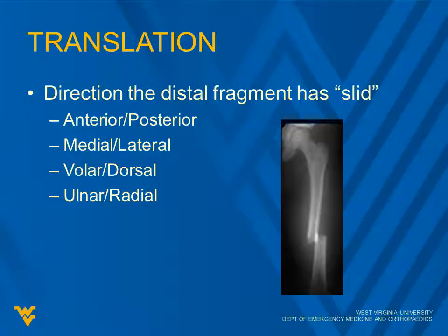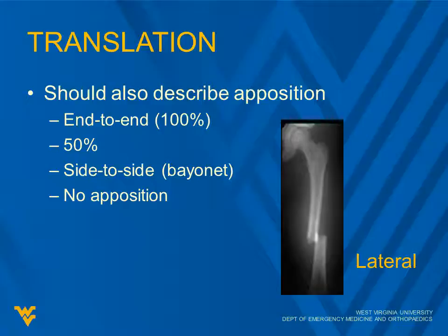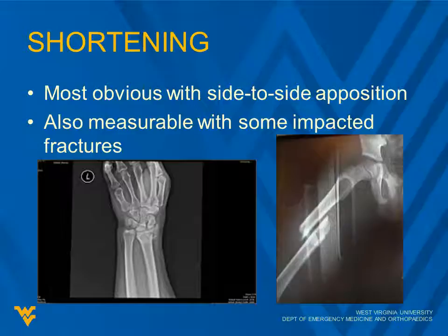Translation is the direction that the distal fragment has slid — that would be anterior, posterior, medial or lateral, volar or dorsal, or ulnar or radial. In this one, this would be a laterally translated fracture, or lateral translation. You should also, when describing translation, describe the apposition. Apposition refers to how the two ends of bone are connected or not connected. End-to-end apposition is a non-displaced fracture — 100% is another term for that. 50% means it slid 50% off to the side. Side-to-side is bayonet. No apposition is another descriptor for fractures significantly apart from each other. So this would be side-to-side apposition, or bayonet. Shortening is most obvious with side-to-side apposition, but it's also measurable with some impacted fractures — you can actually measure how far it's shortened.